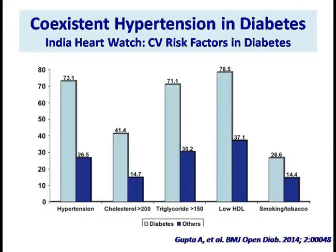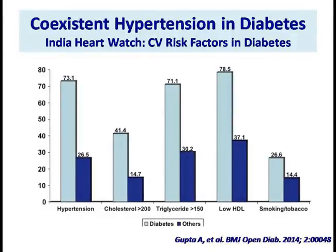In our study, hypertension is very highly prevalent in diabetes. Hypertension was present in about 73% of patients with diabetes in India, clearly showing that these two diseases go side by side. And in patients with resistant hypertension — again, there were 190 patients, out of which 68% had diabetes. So diabetes is a reason for resistant hypertension, and hypertension and diabetes co-exist in a great majority of patients.